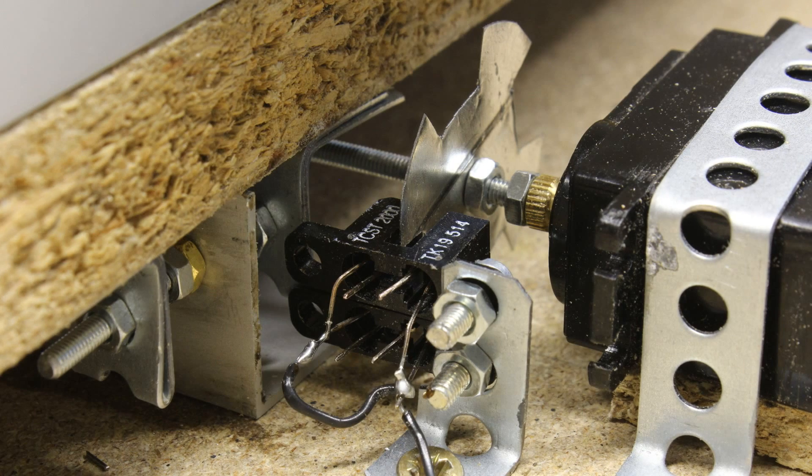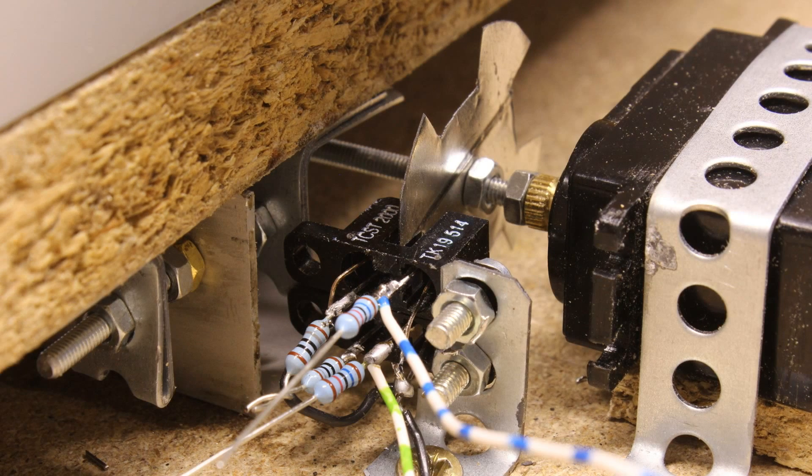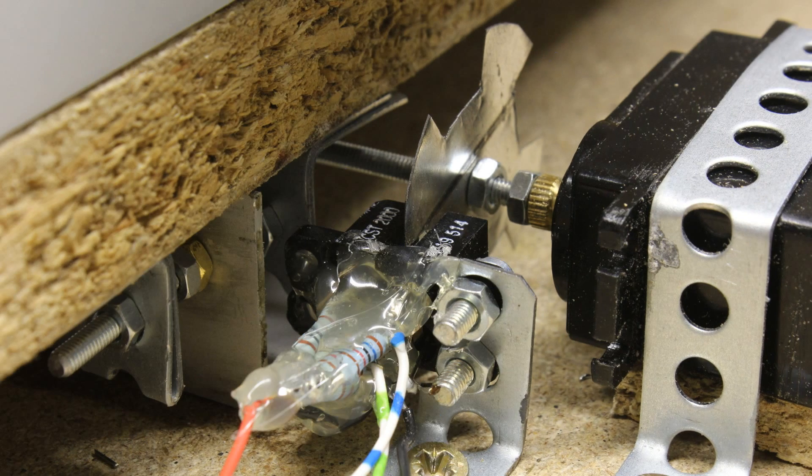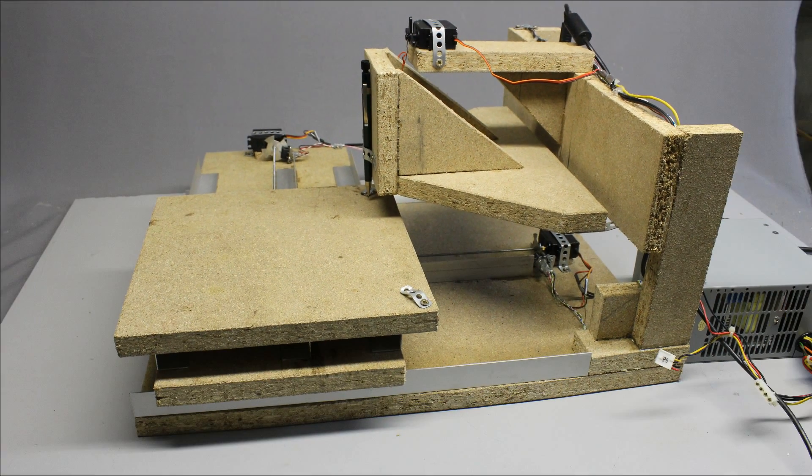The rotational encoder is scanned by two photosensors. The state of the sensors is read by the Arduino Uno. The third axis is moved by a normal servo.